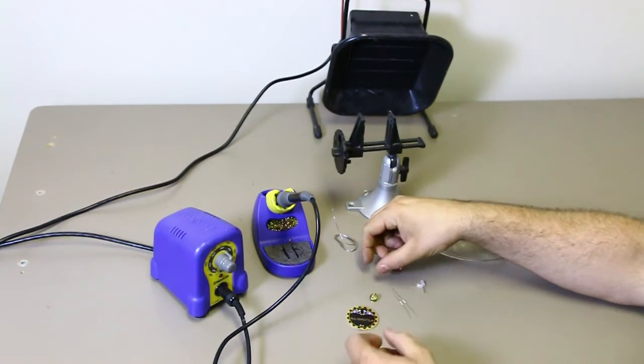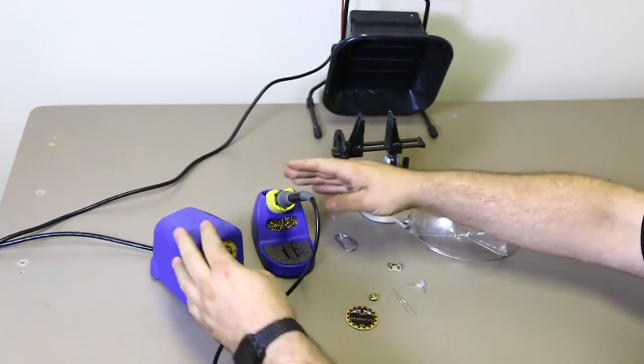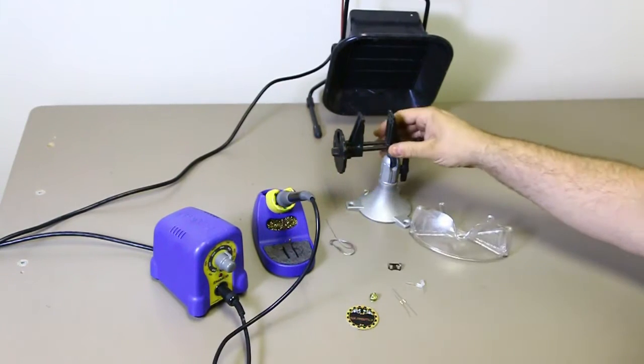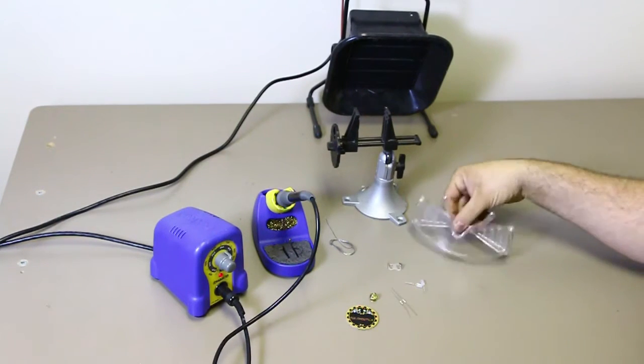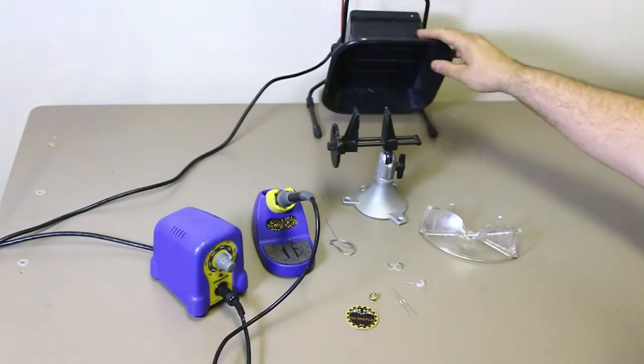The tools that we'll be using to do this: the Hakko soldering iron, some lead-free solder, a set of helping hands, a set of safety glasses, and a fume extractor.